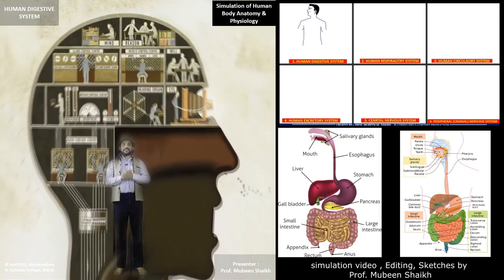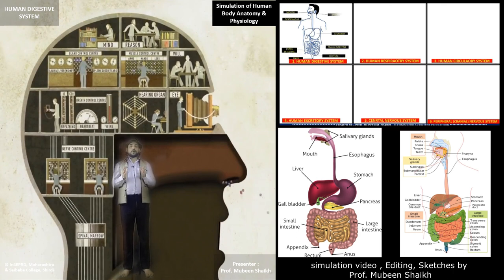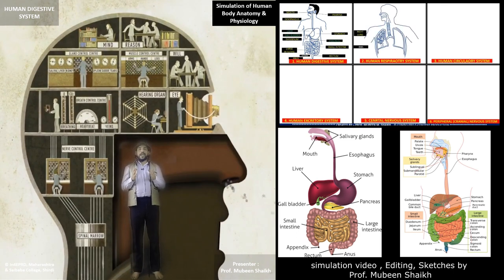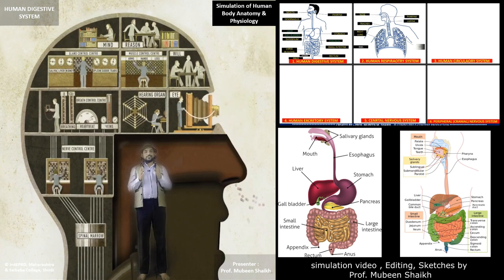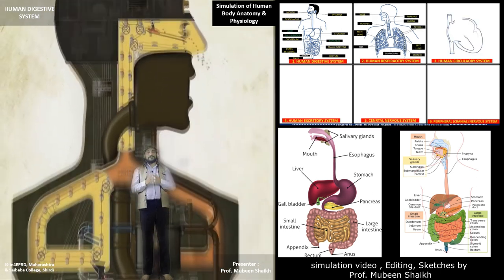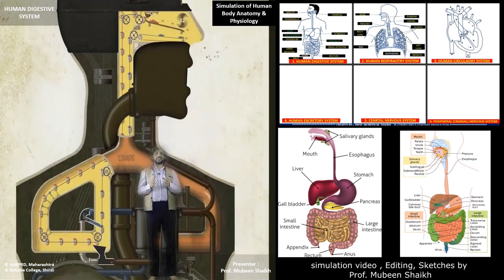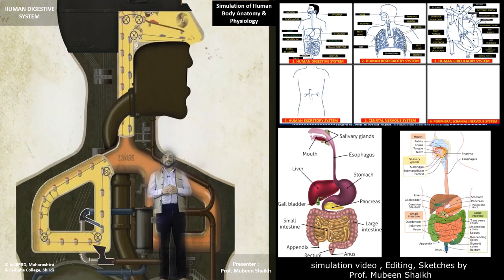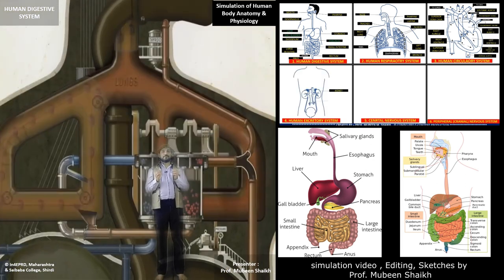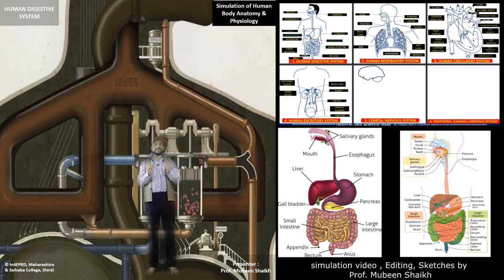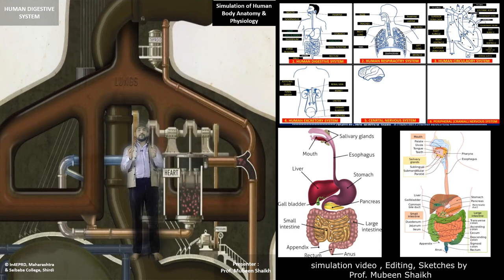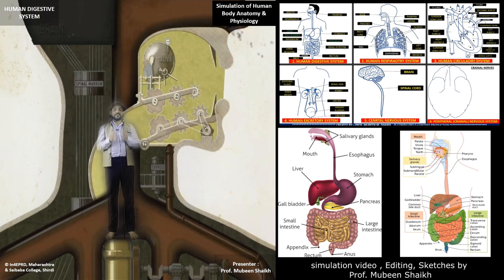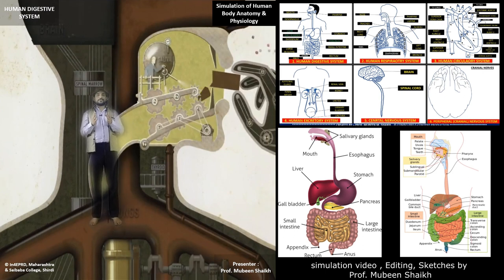First of all, these are the different areas of the brain which control and coordinate our body activities and functions. This is the respiratory system, which shows the inhalation and exhalation of respiratory gases. This is how the four chambers of the heart continuously pump and beat in order to supply nutrients and respiratory gases to the body.